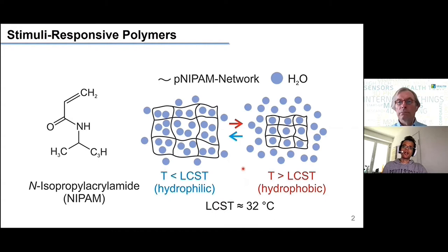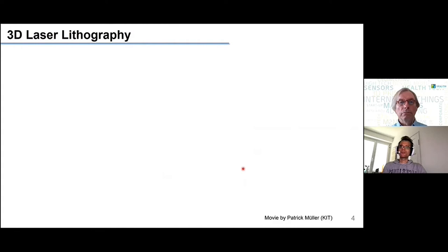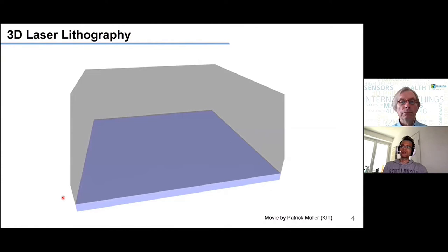I will skip the details of how we make this material into a photoresist or ink and directly show you the technique we use. We use a technique called 3D laser lithography, or direct laser writing — the same technique introduced by the previous speaker with the thermal response beams. I'll quickly show you a movie of how this works.